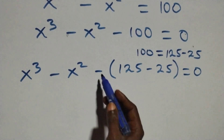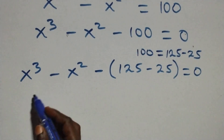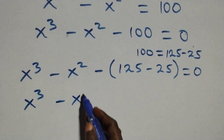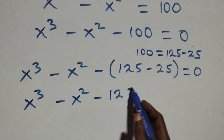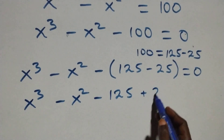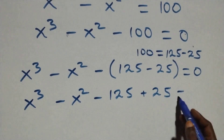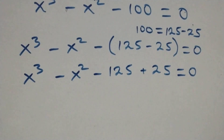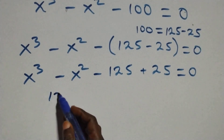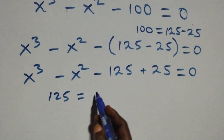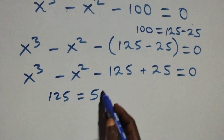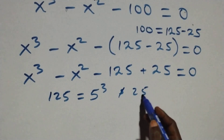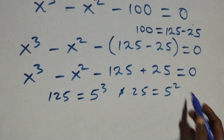And from here, we open this bracket and we have x cubed minus x squared minus 125 plus 25 then equals to 0 here. Then also we can express 125 as 5 times 5 times 5, that's 5 cubed, and also 25 as 5 times 5, that's 5 squared.